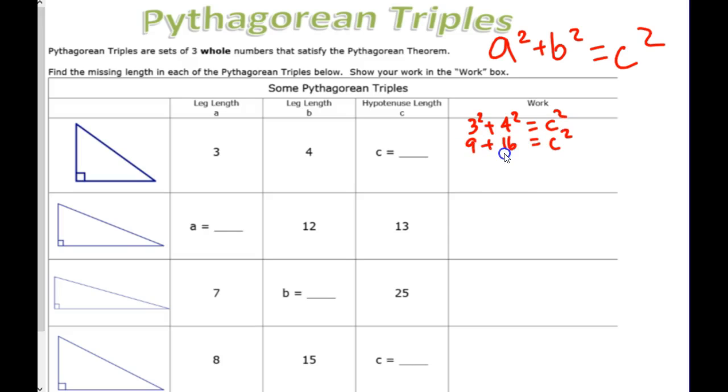And that equals C squared. What is 9 plus 16? 25. Now, is 25 the hypotenuse? Why not? Doesn't it say 25 equals C?